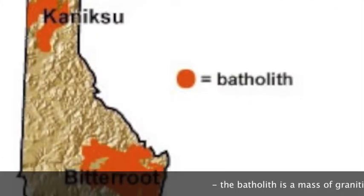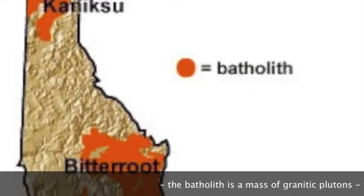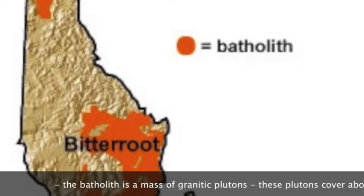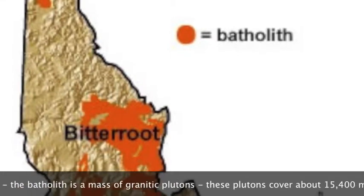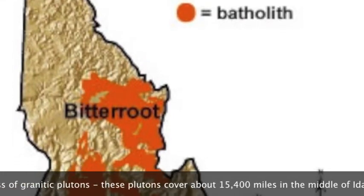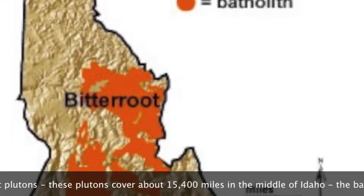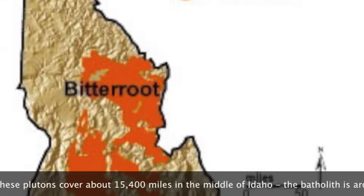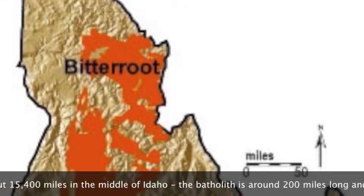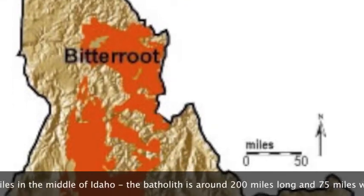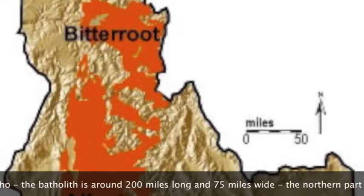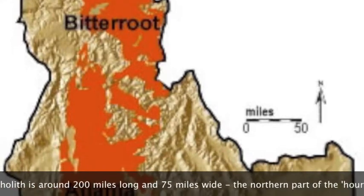A batholith is a large emplacement of plutonic rock. It forms from cooled magma deep in the Earth's crust. The Idaho Batholith is a mass of granitic plutonic rock covering around 15,000 square miles of central Idaho.